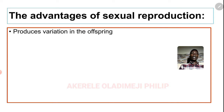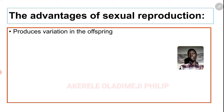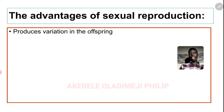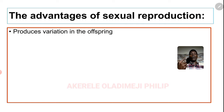Number one: it produces variation in offspring. Variation simply means differences. Why does it produce variation in offspring? Because we have two different gametes coming together — for example, in the case of humans, the sperm from the father fuses with the egg from the mother. So you have different characteristics. I have the mixture of my dad's traits as well as my mom's.